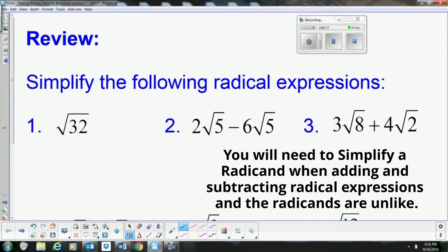We want to simplify the square root of 32, so we're going to find its two factors. 16 times 2 is a nice simple way to break it down.